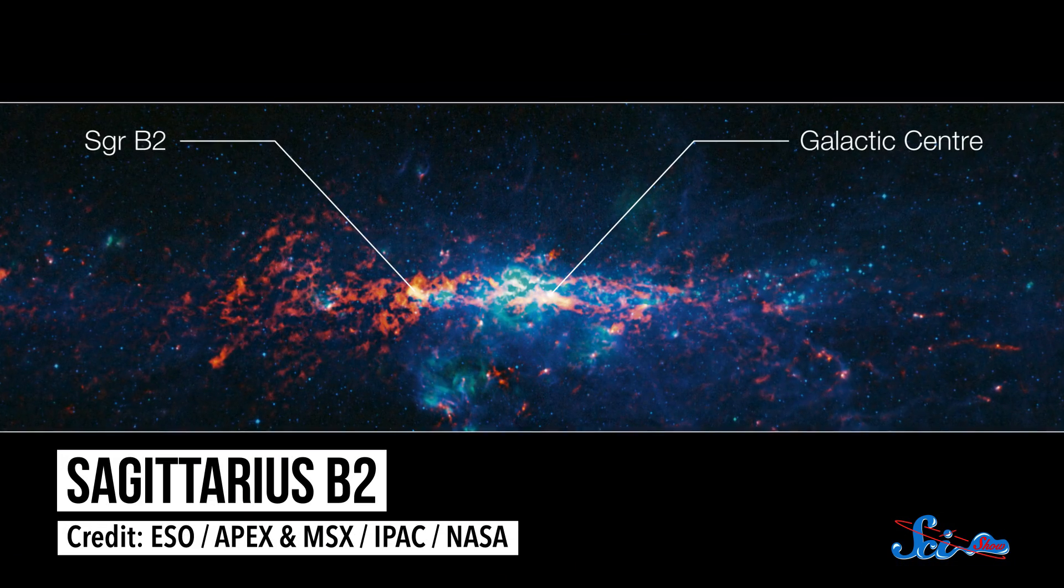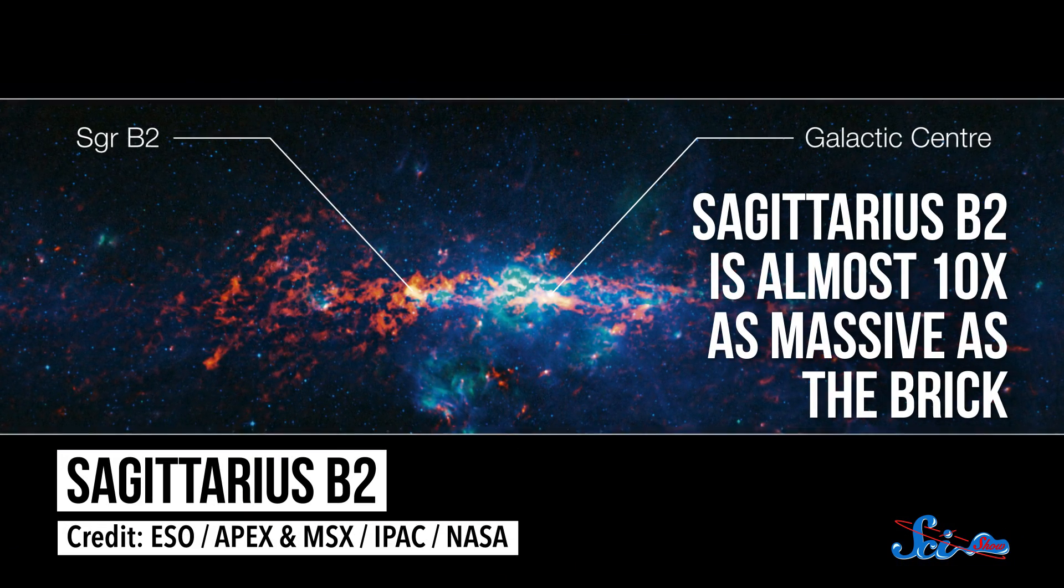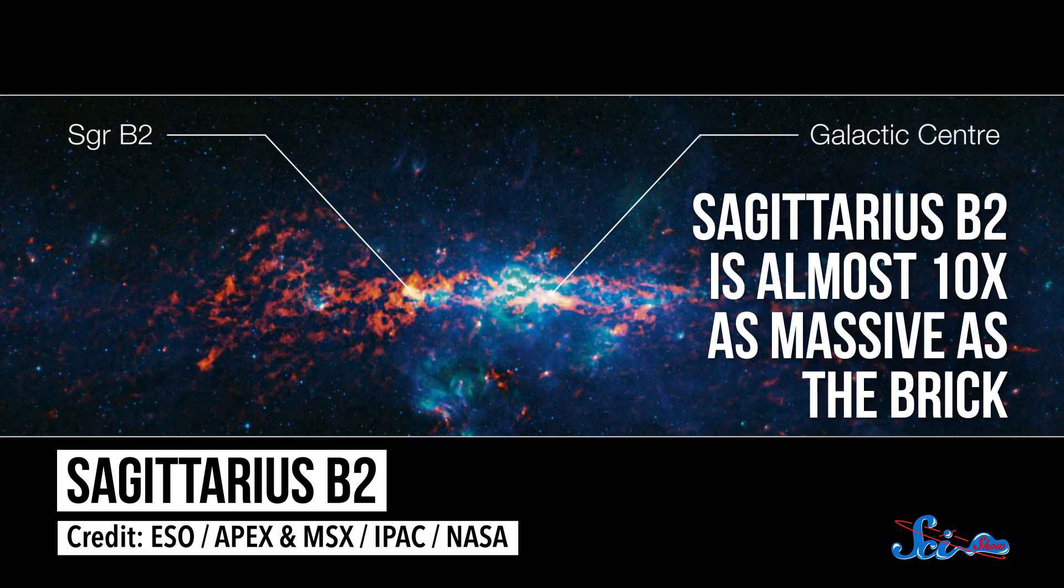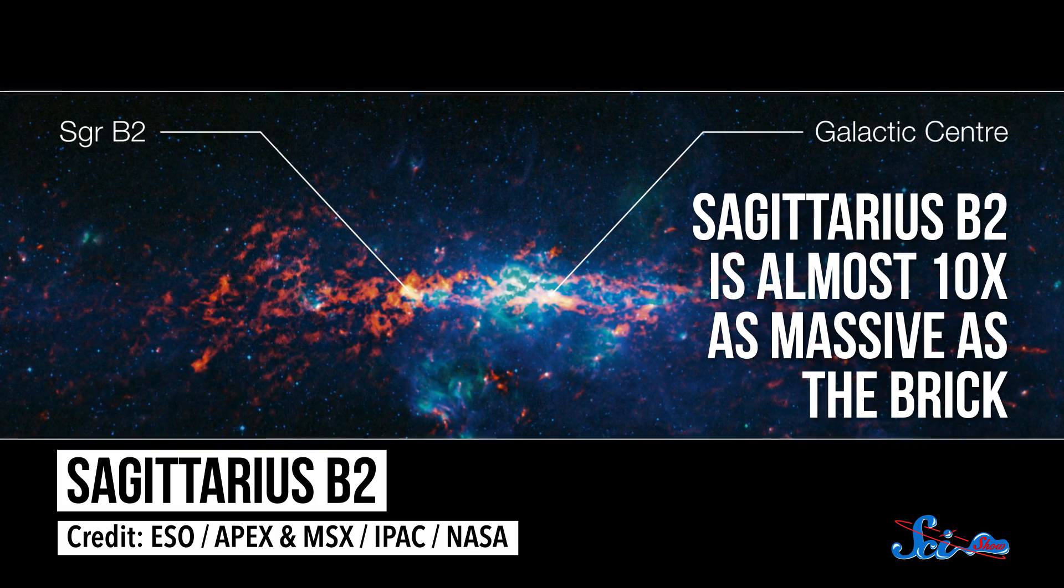Then, it'll become a lot like another cloud in the molecular zone, called Sagittarius B2, which is a huge cloud, almost 10 times as massive as the brick, and the most active site of star formation in the entire galaxy. It probably went through the whole black hole-squeezing process at some point, and within the last few tens of thousands of years, it burst to life with dozens of extreme, high-mass stars.